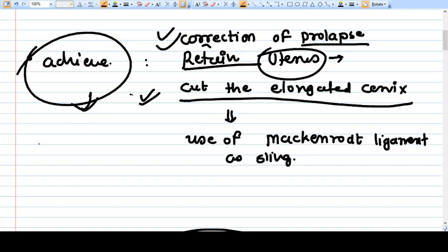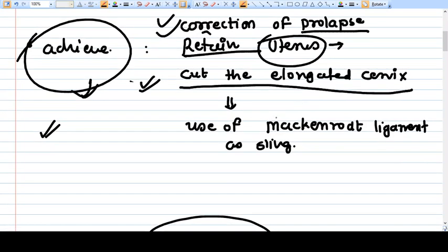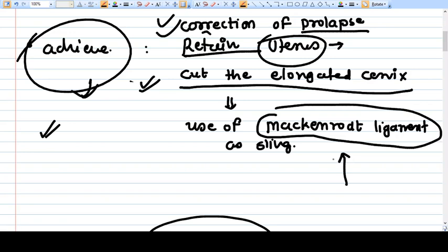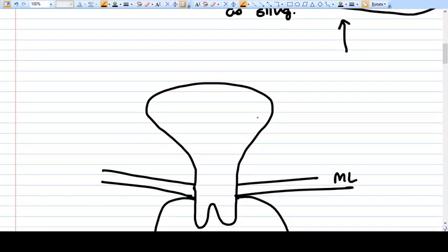What we do in this surgery? We just cut the elongated cervix and use the mackenrodt ligaments as a sling. Actually the mackenrodt ligament is a very strong support of uterus and cervix in the system, but again we want to strengthen this support. How we do this thing?